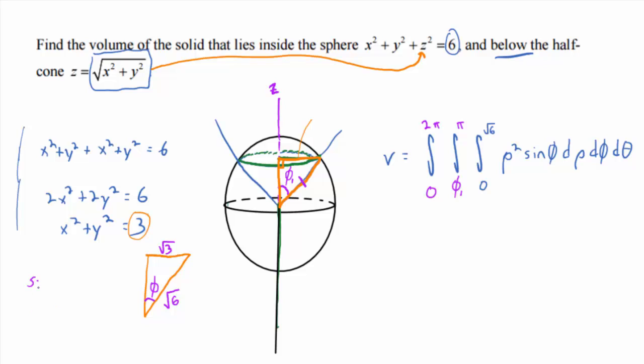So what's the sine of phi equal? Root 3 over root 6, but you can combine that into a single radical, root 3/6, which is root 1 half, which is root 2 over 2. So if sine of phi is root 2 over 2, what does phi have to equal? 45 degrees, pi fourths. So there's your setup.